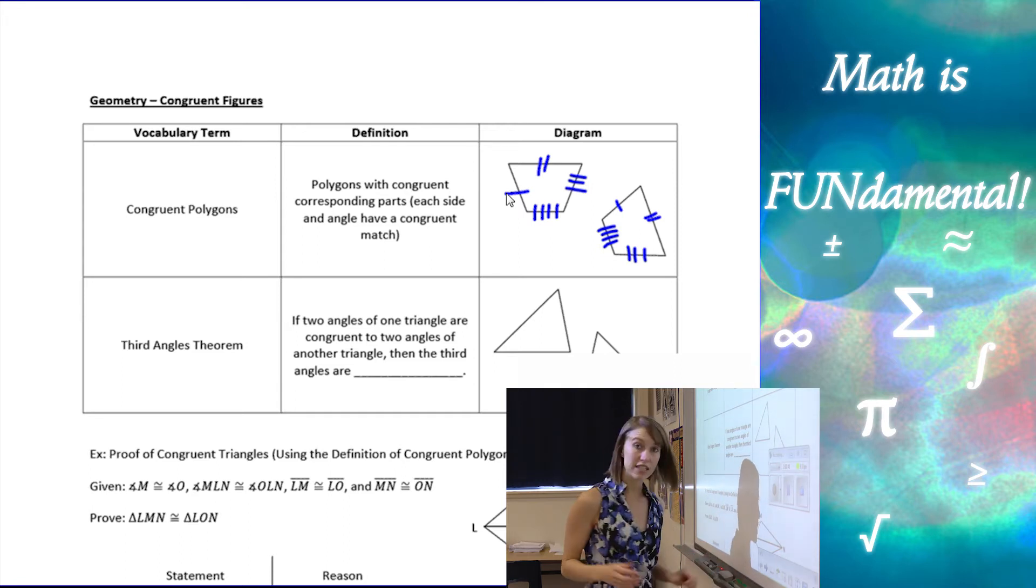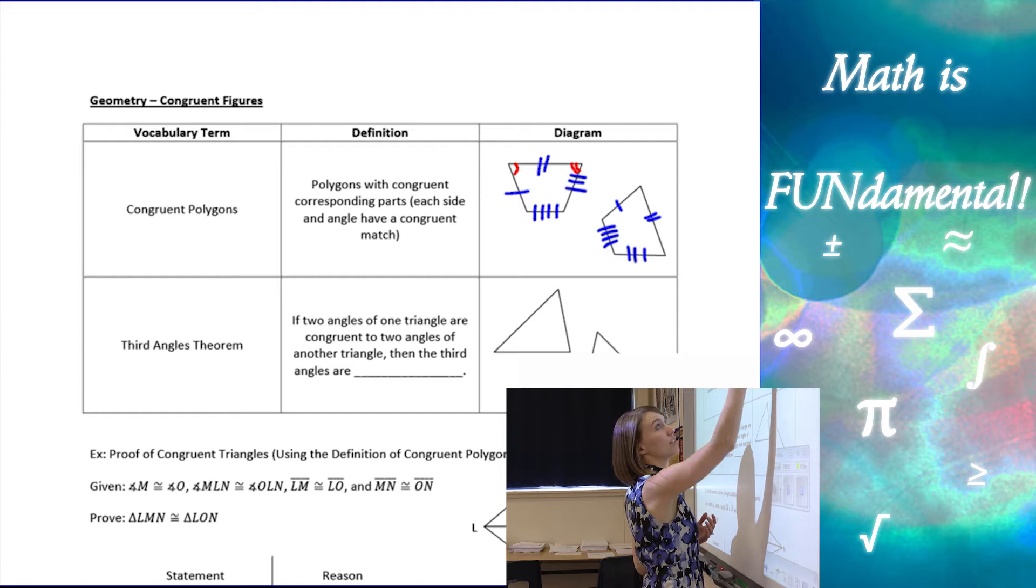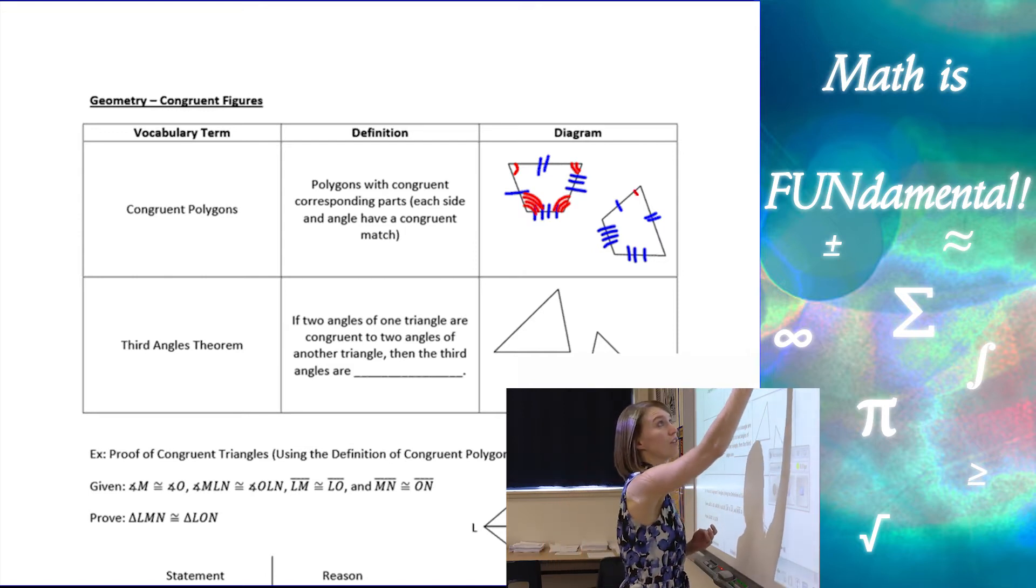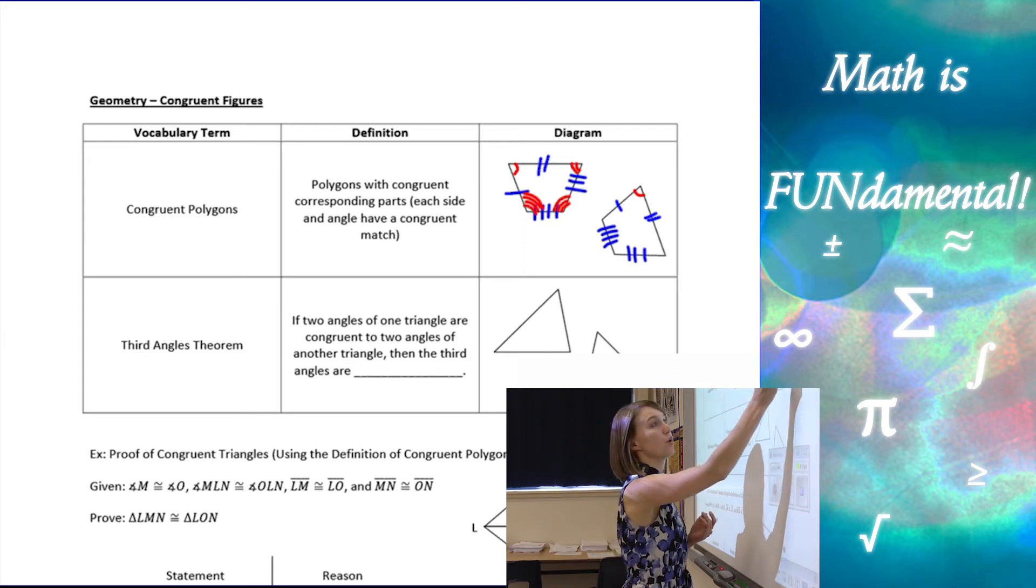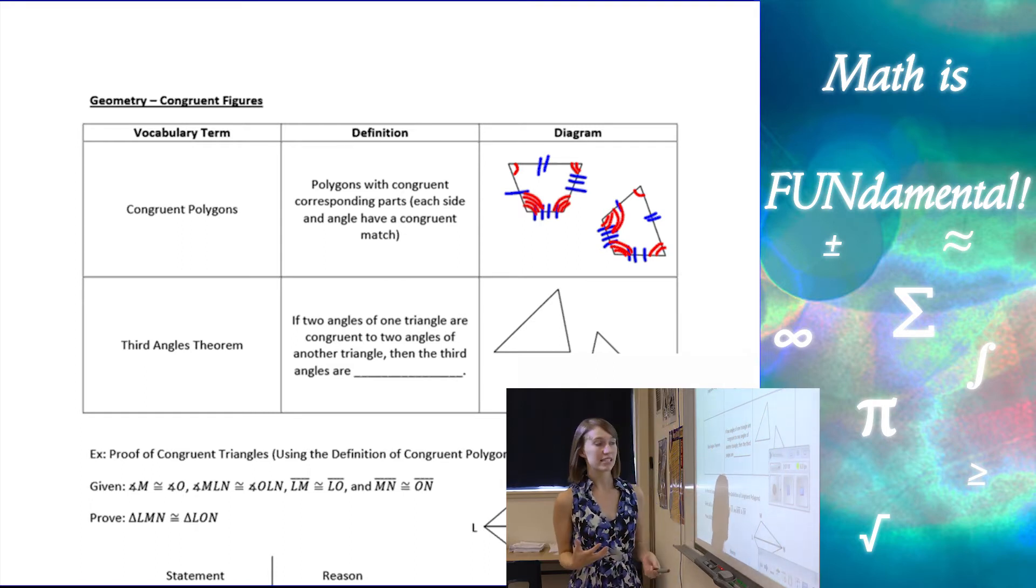We also need to make sure all of the angles have corresponding angles that are congruent. So for each angle, which I will mark here in red—one, two, three, four—then on the other polygon they each have to have their own matching angle. So one matches to one, two matches to two, and so on. There is the basic definition of congruent polygons.